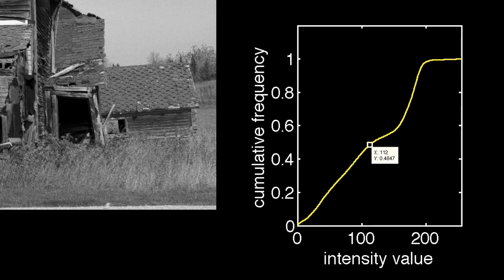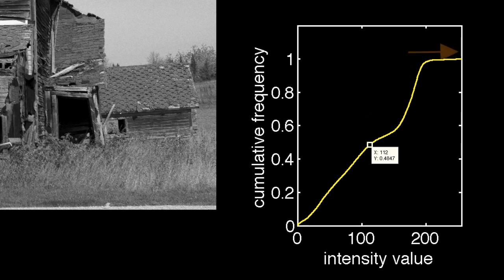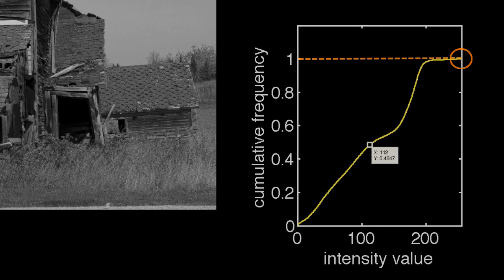The cumulative frequency always satisfies two important properties. First, the cumulative frequency is a non-decreasing function of intensity, meaning the plot can't get smaller as it moves from left to right — it could stay at the same value, but it couldn't get smaller. Second, the cumulative frequency always ends with a value of 1 for the largest possible intensity, because all of the pixels have an intensity that is less than or equal to the maximum intensity.